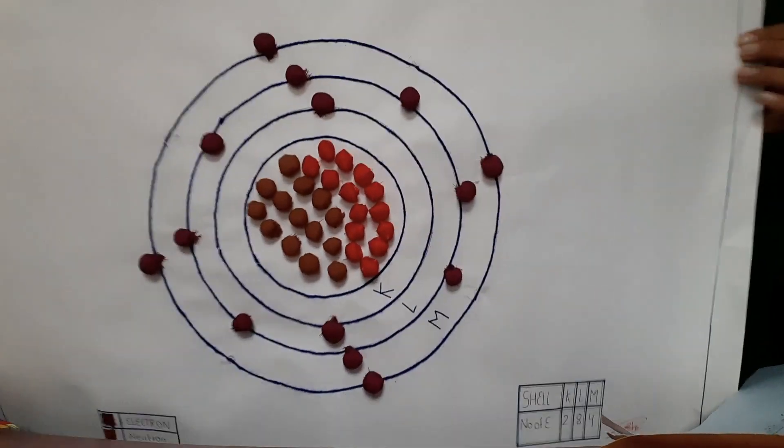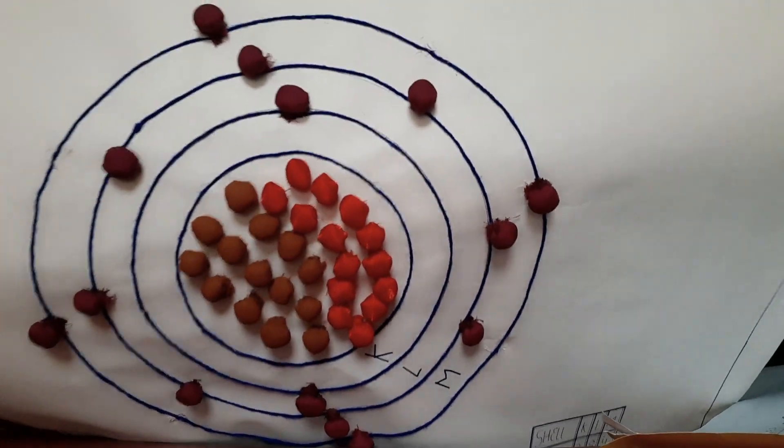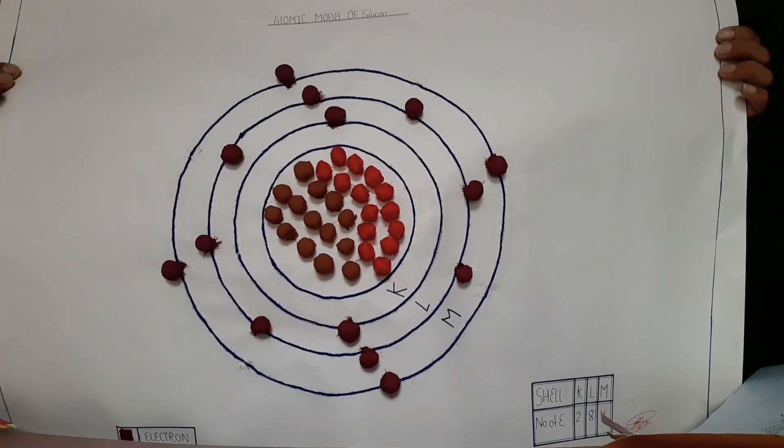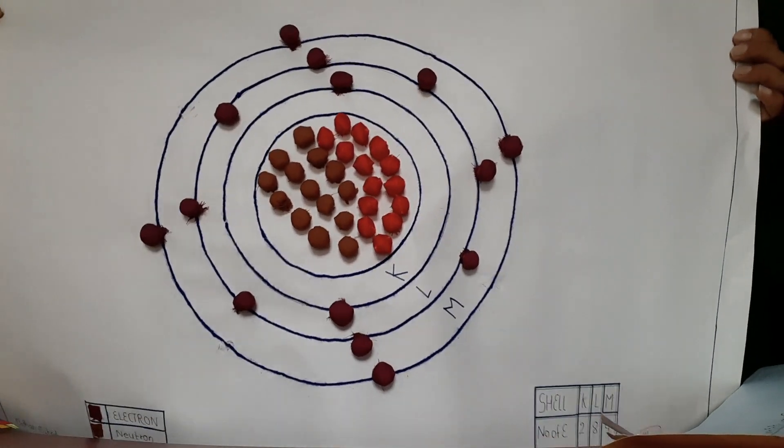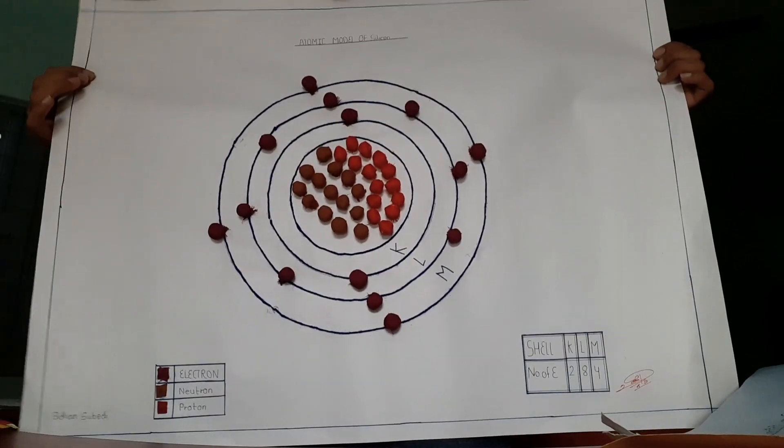This one is so beautiful — I was shocked! How can a person creatively make something like this? This is made by Vidhan Subedi of class 8. Check it out. You can see how much creativity he has used. He has made the atomic model of silicon, and I was truly shocked.